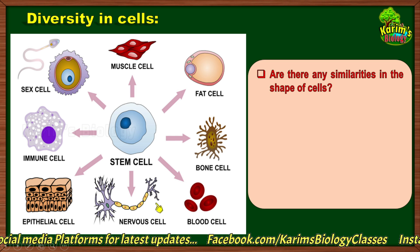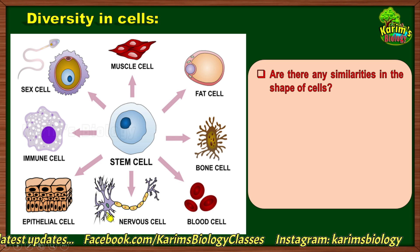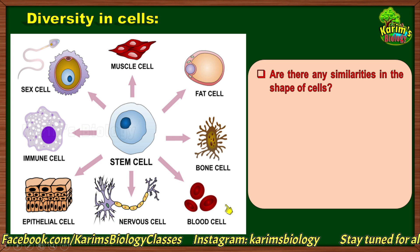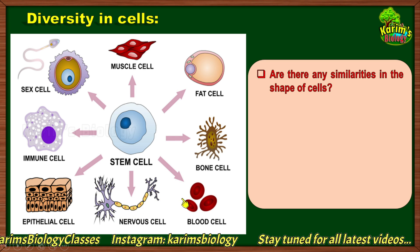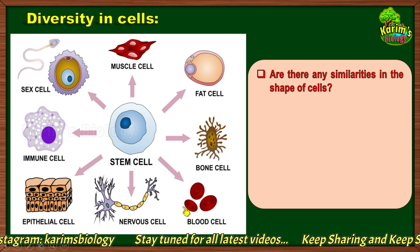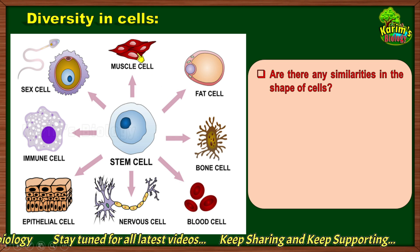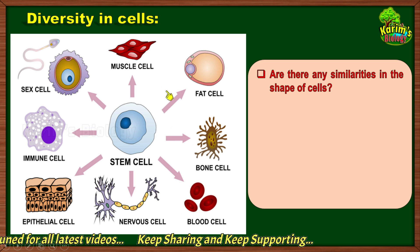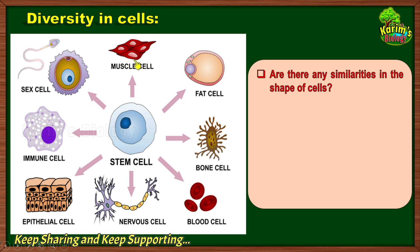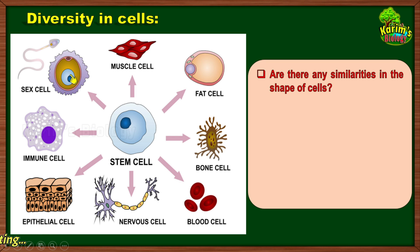Let us compare the nerve cell to that of a blood cell — there is no similarity, they are different. Now compare the blood cell to that of a muscle cell: the blood cell is round whereas the muscle cells are spindle shaped. Now compare the muscle cell to that of the sexual cells which are gametes. The male gamete is in the form of an arrow with a tail, and the female gamete is big and round, but the muscle cells are in spindle shape.